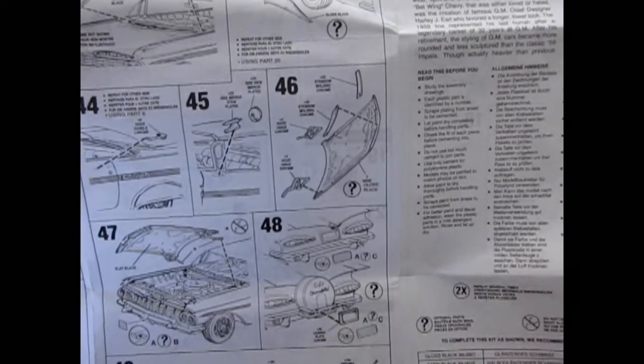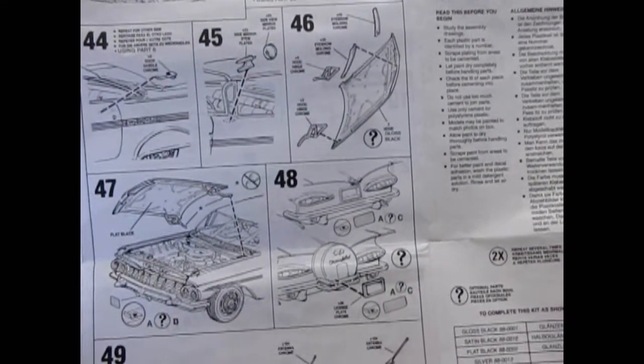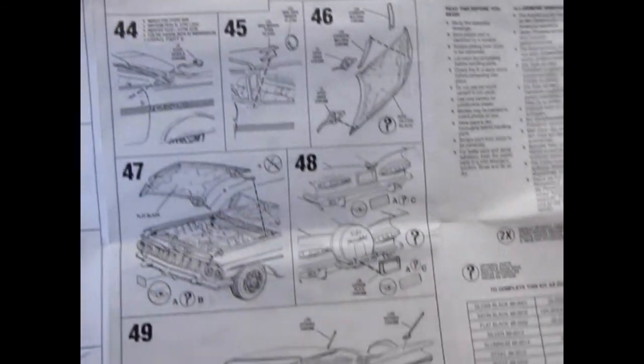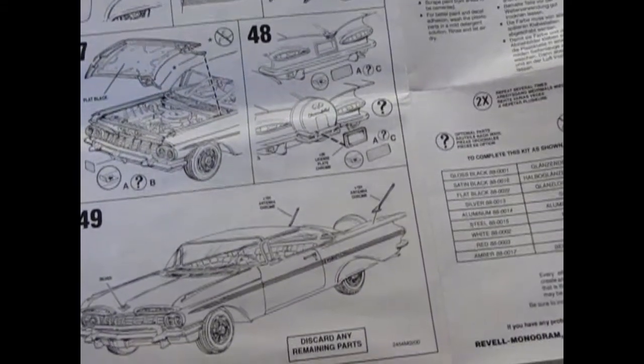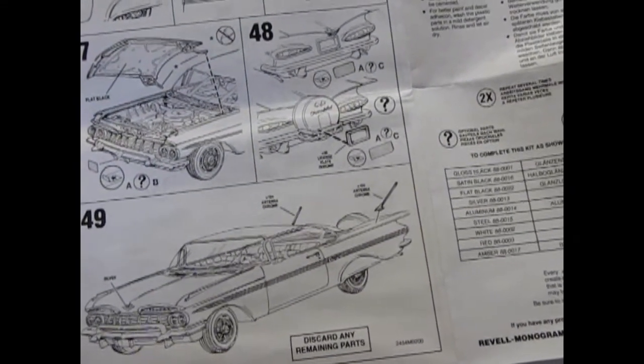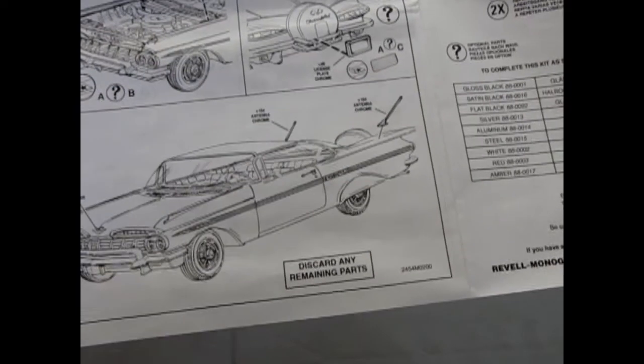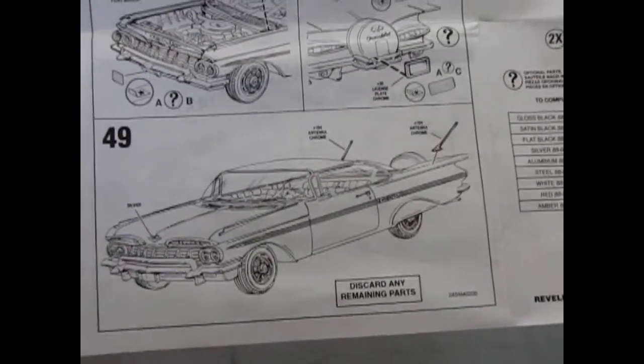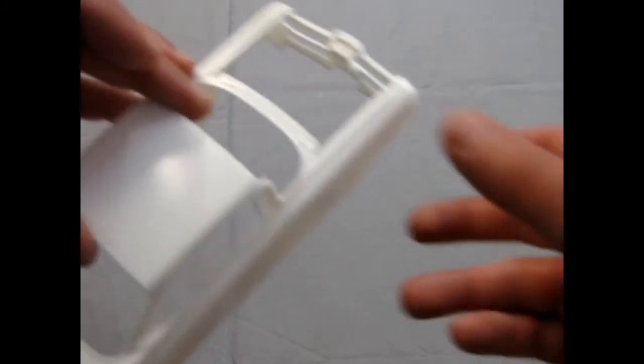So you can build one with and one without. And, of course, separate windshield wipers. Operating hood. And very many cool things. It says, discard any remaining parts. But, hey, as a customizing model kit type of guy, you know you never discard anything. Okay, let's look at the body.